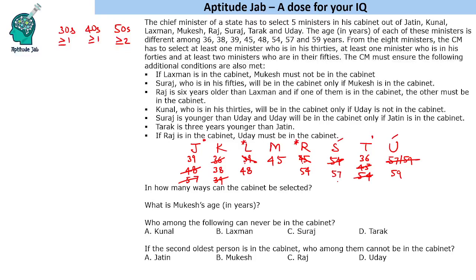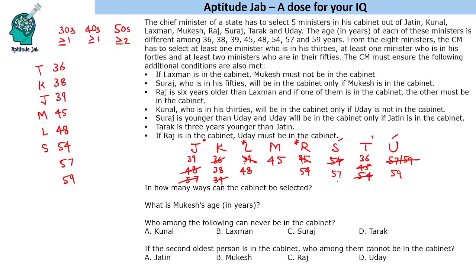To summarize, let us make a table arranged by age: 36 is Tarak, 38 is Kunal, 39 is Jatin, 45 is Mukesh, 48 is Lakshman, 54 is Raj, 57 is Suraj, and 59 is Uday. This is the age of all 8 ministers. Now we shall work on finding the team.